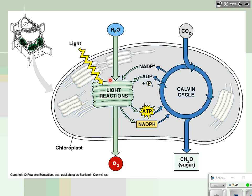If the light reactions represent the 'photo' part of photosynthesis, then the Calvin cycle is certainly the 'synthesis' part, because we're going to synthesize sugar. That's the whole point of photosynthesis — to make sugar, which is the food of the plant. We're going to learn how the Calvin cycle captures carbon dioxide from the atmosphere and uses energy from ATP and NADPH to transform those carbon atoms into a usable sugar.